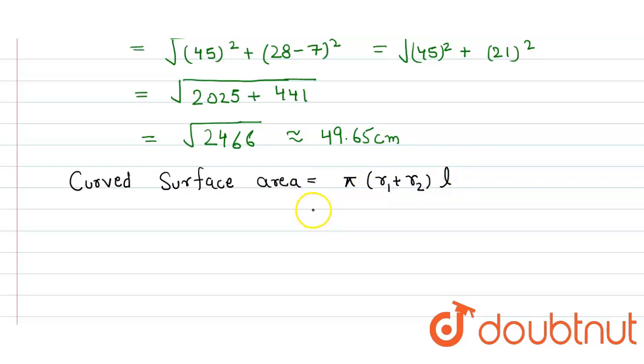So here we just simply replace all these values. That one is 22/7 × (28 + 7) × l equals 49.65.